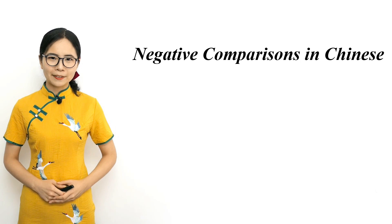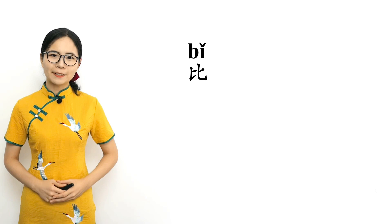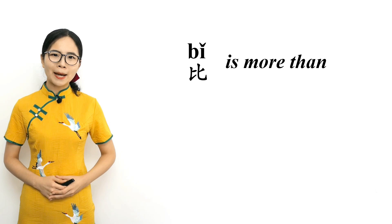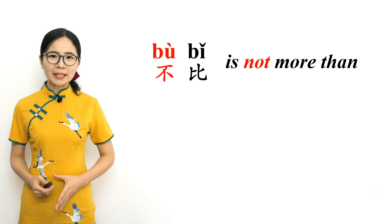Our first way of doing negative comparisons is based on the word 比 that we learned previously for doing positive comparisons. 比 means 'is more than,' and we can do negative comparisons by adding the word 不 in front of 比. 不 means 'not,' so 不比 means 'is not more than.' Please repeat after me.